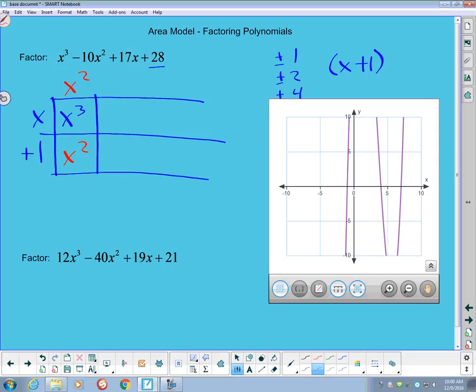And that would make this an x². These two on this diagonal are supposed to add up to -10x². And if that's a 1x² right there, and they're supposed to add to -10, then this must be a -11x² right there.